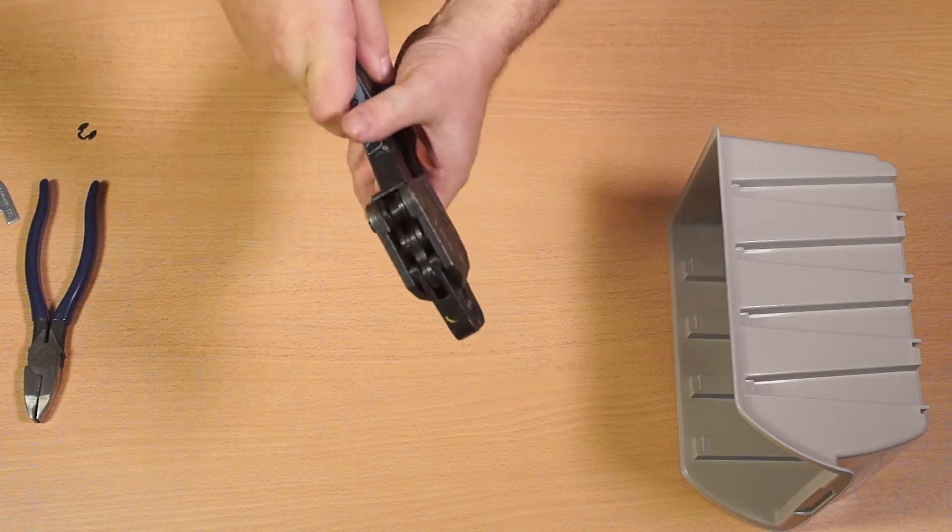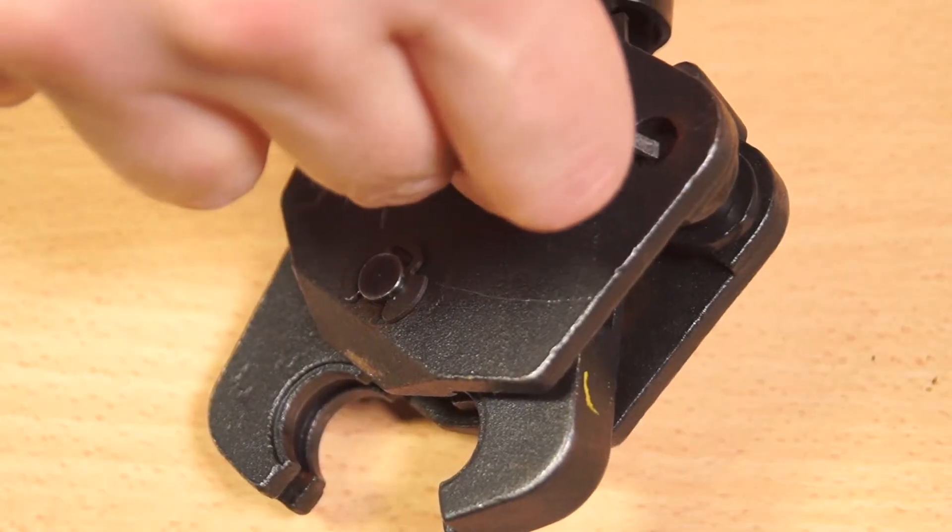Pull back on the moving handle to open the jaws. Push the adjustment pin out just enough so you can grab it with your fingers or the pliers.